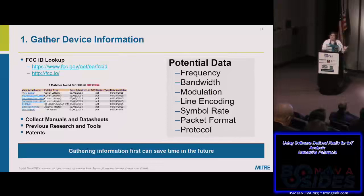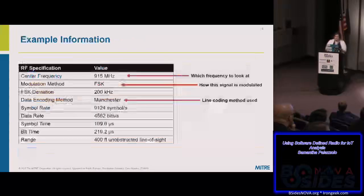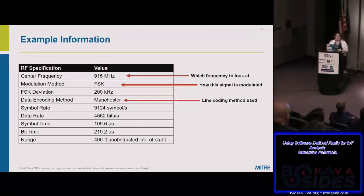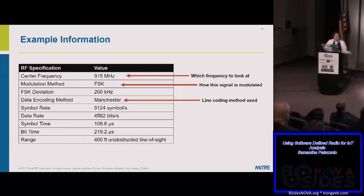To go through these steps, I'm going to use an example system — an ecosystem of devices. Doing the first step, these are some examples of information I was able to gain from FCC ID lookups and manuals. A key feature I wanted to point out is the center frequency: 915 megahertz — that's telling me where to look when I use the SDR. The other highlighted items are the modulation method, FSK (frequency shift keying), and Manchester line encoding. Those two will come up in a little bit.